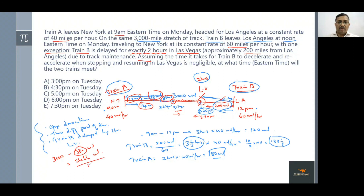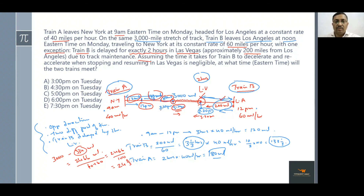Both trains are running in opposite directions at 40 and 60 miles per hour, so their combined speed is 100 miles per hour. To cover 2466⅔ miles at 100 mph takes 24⅔ hours, or 24 hours and 40 minutes. Starting from 5:20 PM Monday, adding 24 hours 40 minutes brings us to approximately 6:00 PM on Tuesday — that's when the two trains meet.